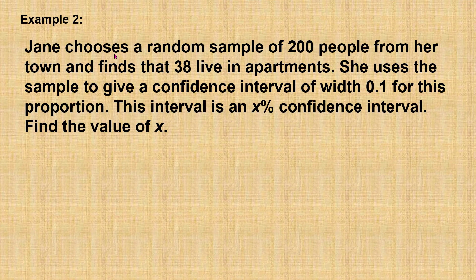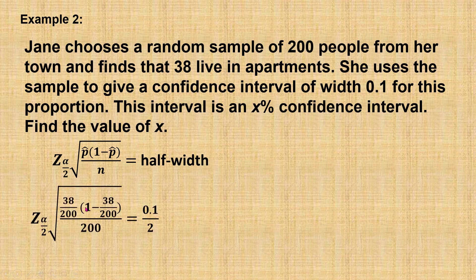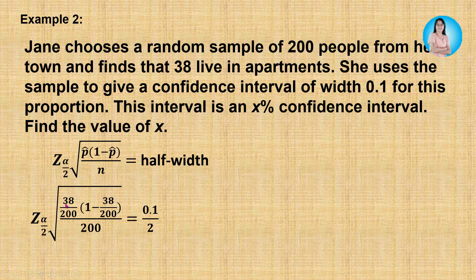Next example: Jane chooses a random sample of 200 people from her town and finds that 38 live in apartments. She uses the sample to give a confidence interval of width 0.1 for this proportion. This interval is an x percent confidence interval. Find the value of x. The width of the confidence interval for the population proportion is 0.1, and since the estimation error equals half the width, the estimation error is 0.05, with sample proportion 38 over 200 and sample size 200.